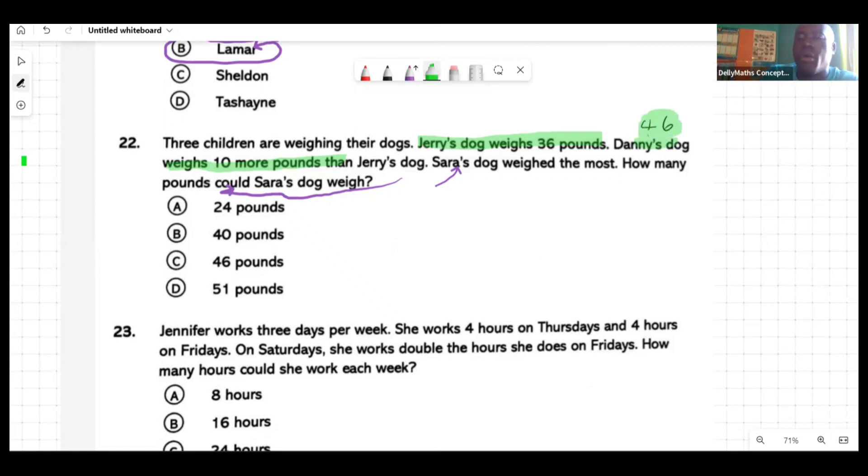Because Danny's dog would weigh 10 pounds more than Jerry's dog. So if Jerry's dog is 36 pounds, Danny's dog is 46 pounds. At the end of the day, Sarah's dog weighed the most, so Sarah's dog could not be 24 because it had to be more than 46, could not be 40, could not even be 46 because Sarah's dog weighed the most. So the number here that is actually bigger than all of those would have been 51. So 51 is a possible weight of the dog.